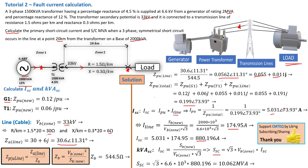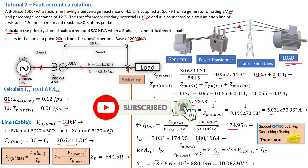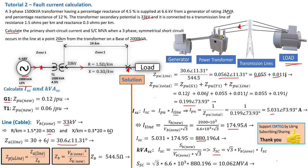The key takeaway from this tutorial: when calculating fault current, you must identify where the fault is occurring and the direction of current flow. Since the fault is at 20 kilometers, the transformer pulls everything it has, and the primary current reaches its maximum — the short circuit current, which is 880.2 amps as calculated. Please subscribe to SimTech channel, give this tutorial a thumbs up, and stay tuned for the next tutorial.